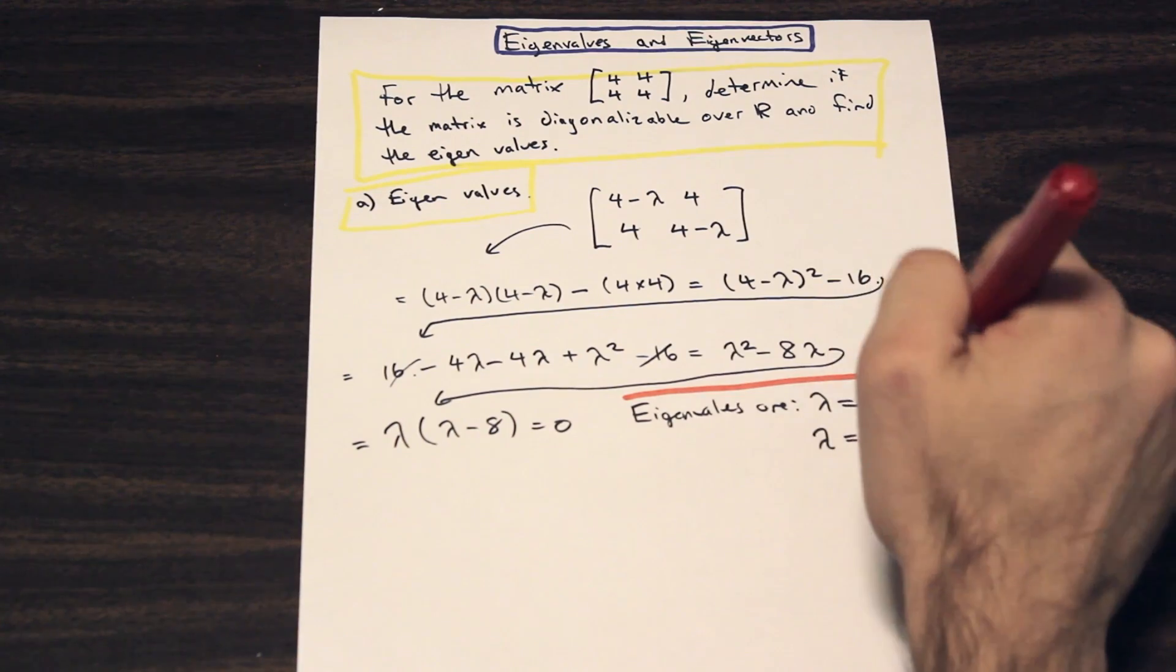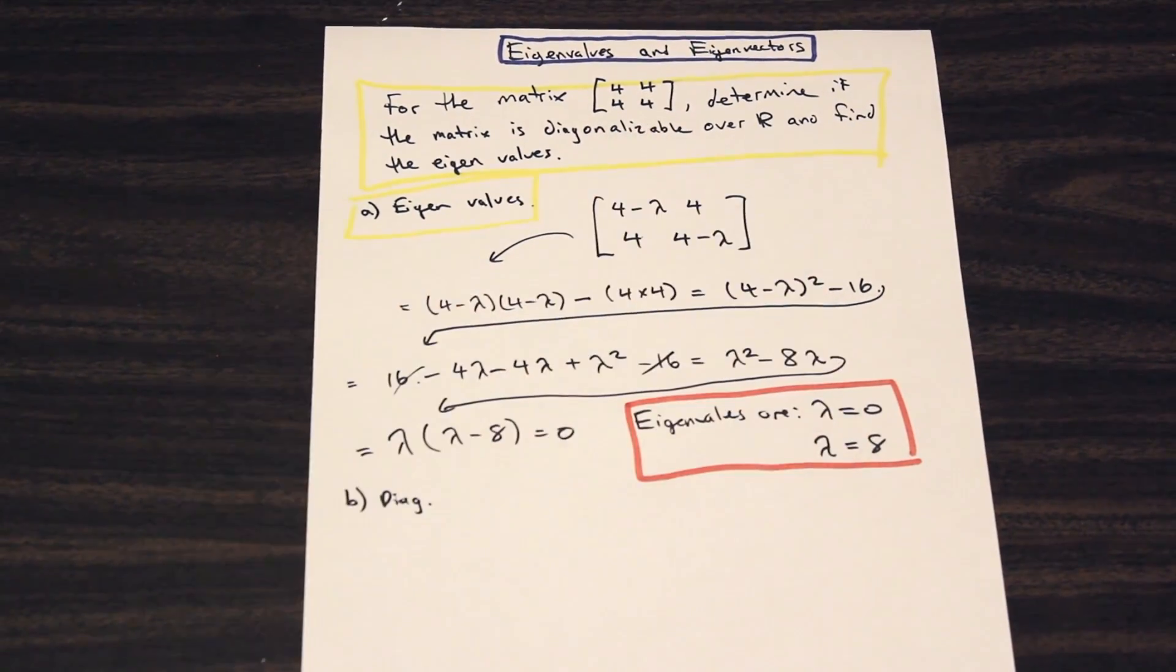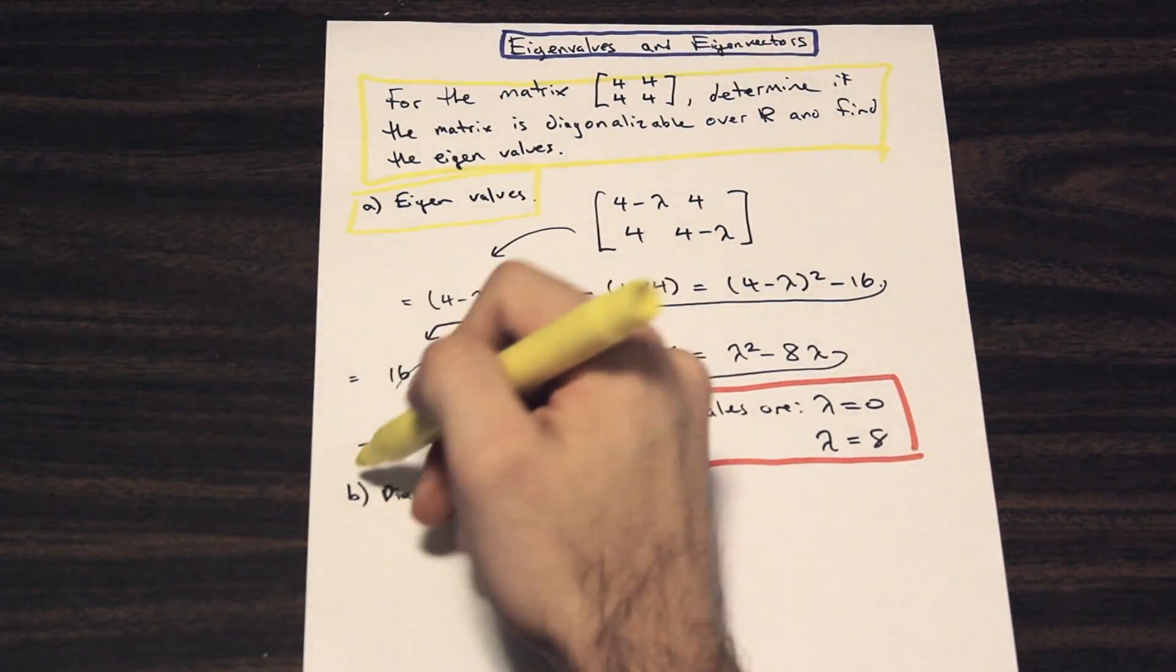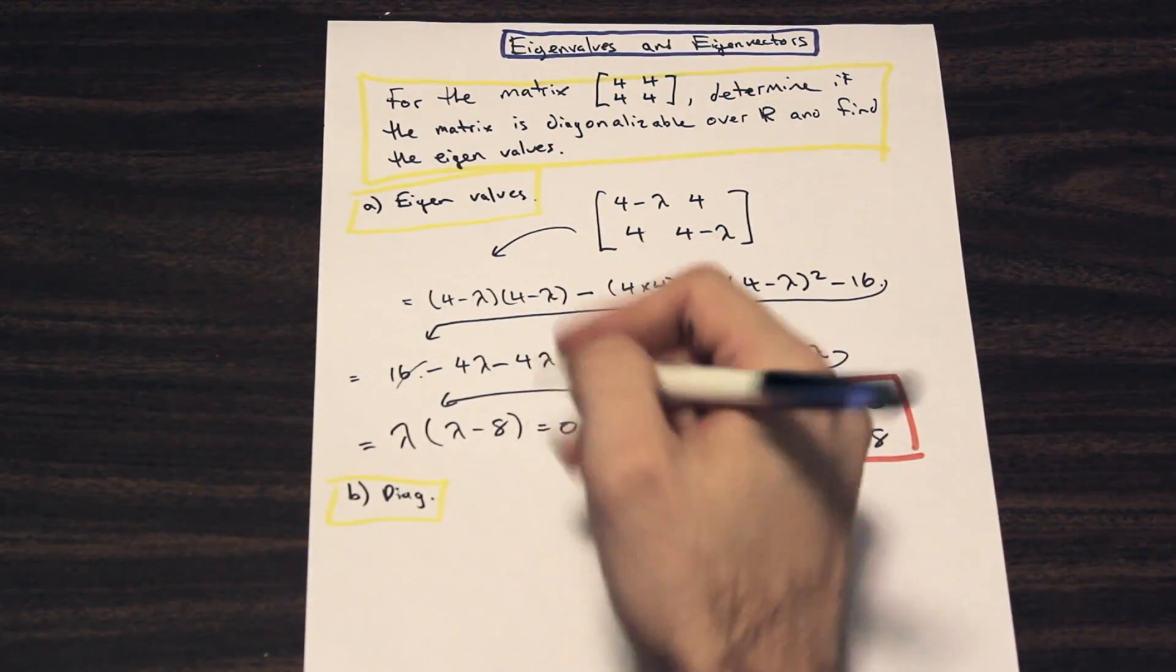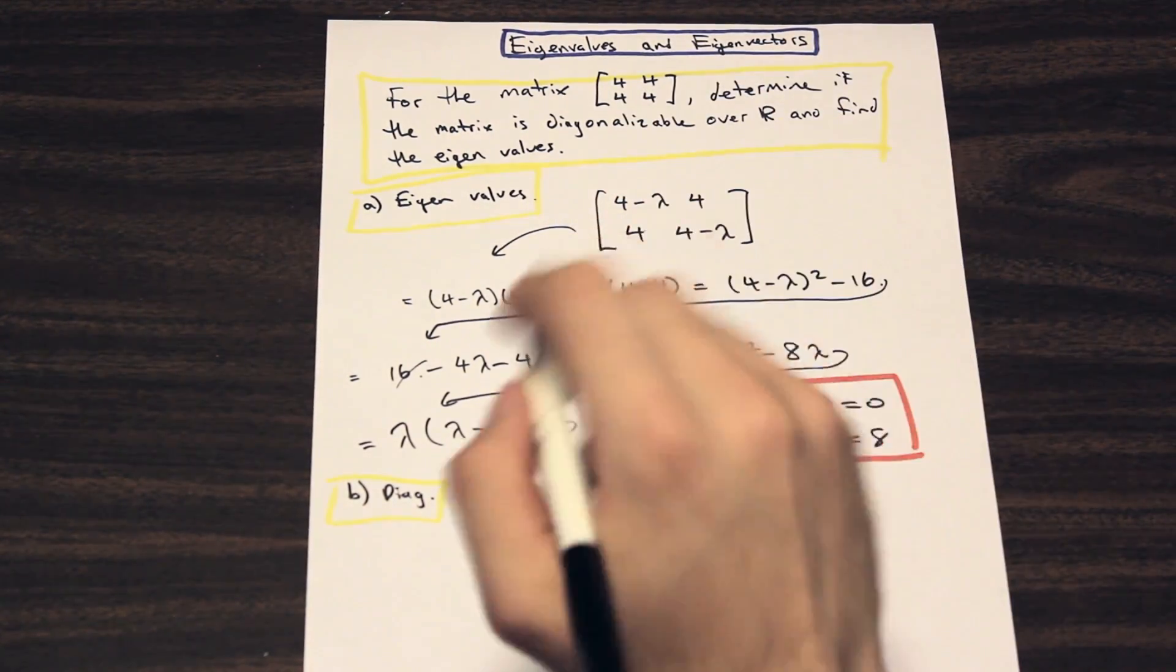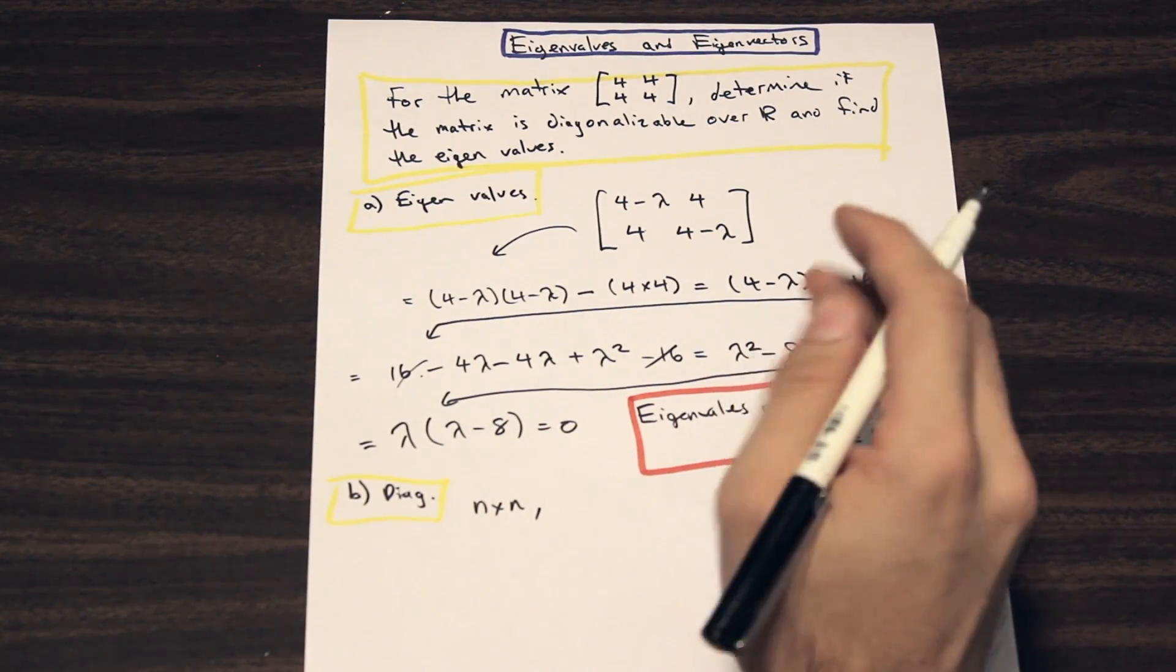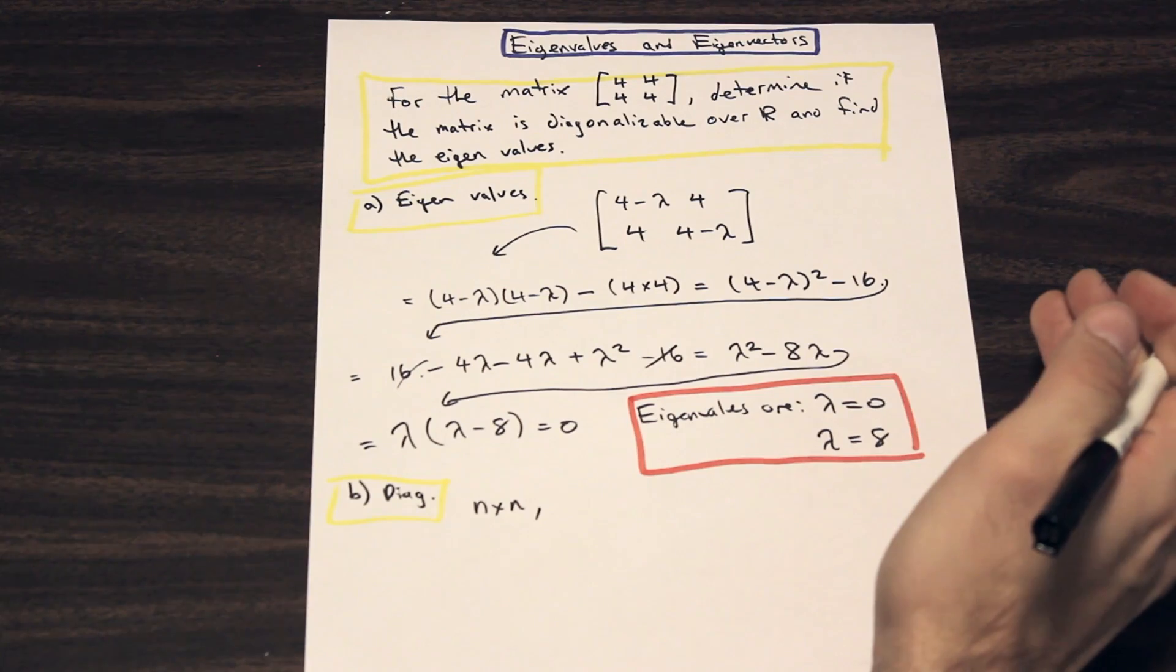The next part of the question is going to ask us to find out whether the matrix is diagonalizable. So, is the matrix diagonalizable? If you have an n by n matrix—in this case, n is 2, we have a 2 by 2 matrix—there must exist two distinct eigenvalues in order for this matrix to be diagonalizable. So we need two distinct eigenvalues.